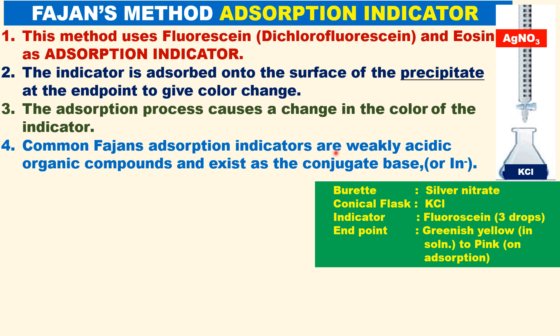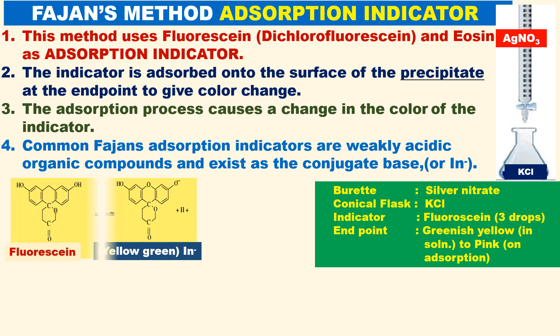Common adsorption indicators are, for example, organic compounds. They are weakly acidic and they exist as anions — they exist as conjugate base anions.